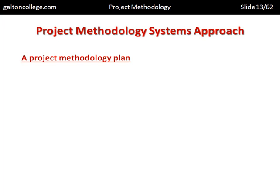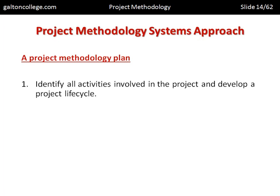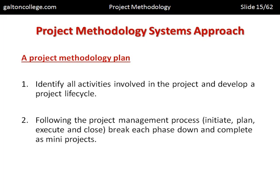Let's start by looking at the project methodology plan. First, identify all activities involved in the project and develop a project lifecycle — look at everything involved, the starting point, and estimate the ending point. This gives a lifecycle for the project, a sense of start and end, and what's involved. There are limits and parameters set in place. Following the project management process: initiate the project, plan, execute, and close.